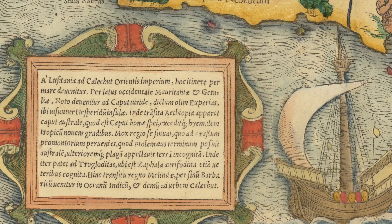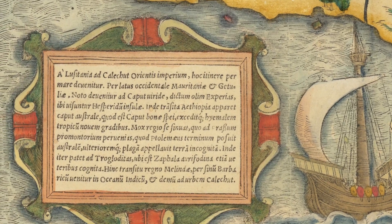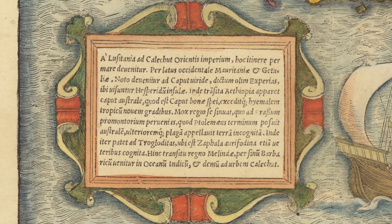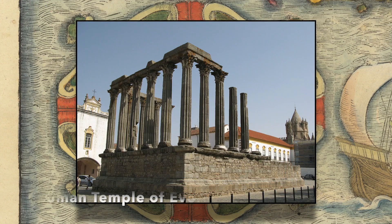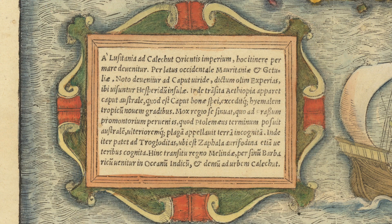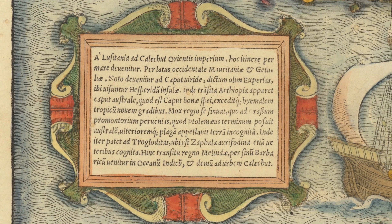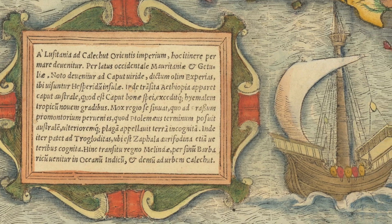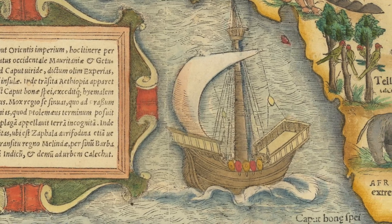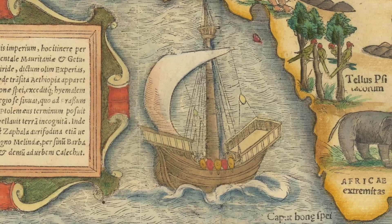In the bottom left of the map is a cartouche, which details sailing directions from Lusitania — an ancient Iberian Roman province located where modern-day Portugal and a portion of western Spain lie — to Calcutta. To the right is a Portuguese ship in the Gulf of Guinea, which is a general representation of trade and navigation.